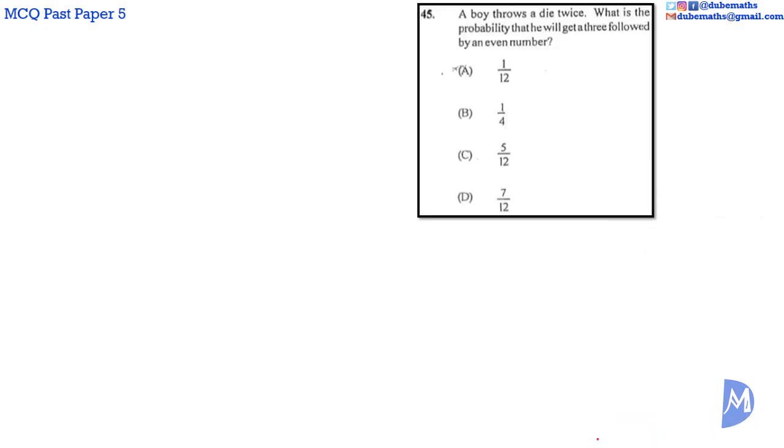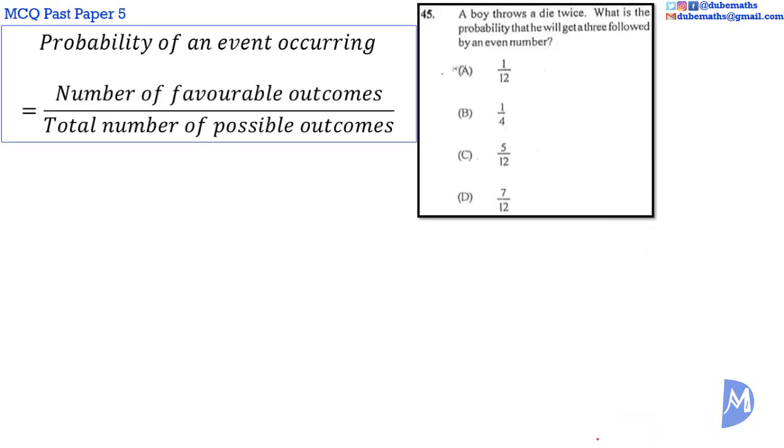Question 45. The probability of an event occurring is equal to number of favorable outcomes over the total number of possible outcomes. The probability of throwing a three is equal to, on a die,